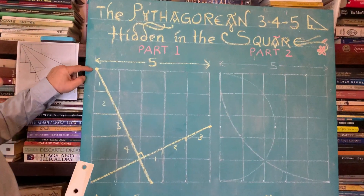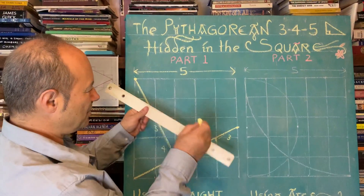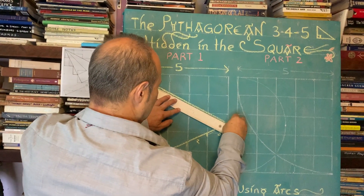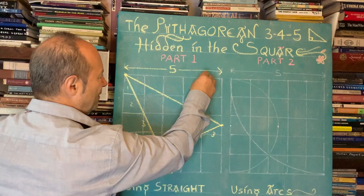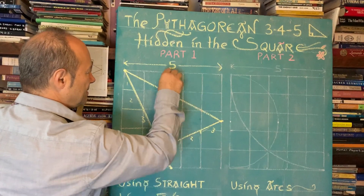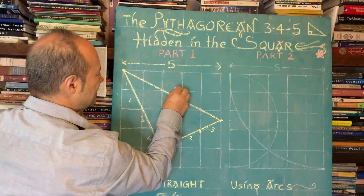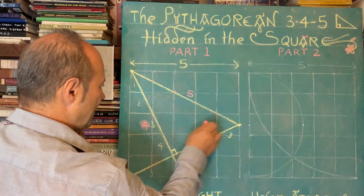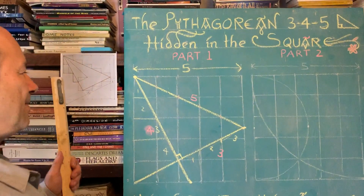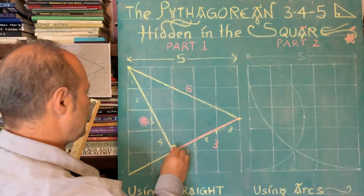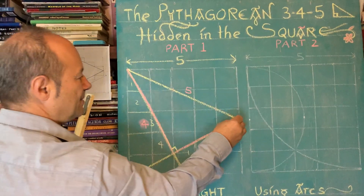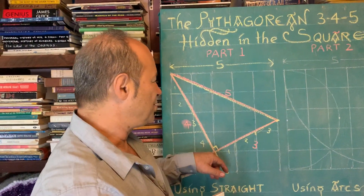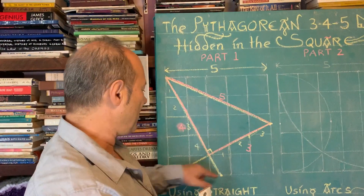So if this is three and that's four, according to Pythagoras's theorem this distance from here to here has to be five units — and we'll check it. Counting down: one, two, three, four, five. So this distance is also five. To summarize: this distance is five, this distance is four, and that shorter distance is three. Here we have the 3-4-5 Pythagorean triangle generated from straight lines inside a five-by-five grid.